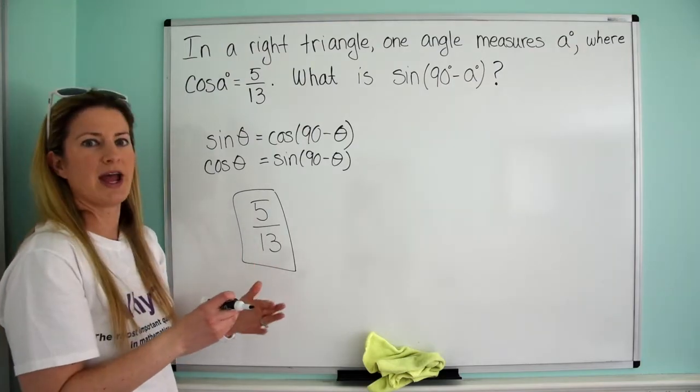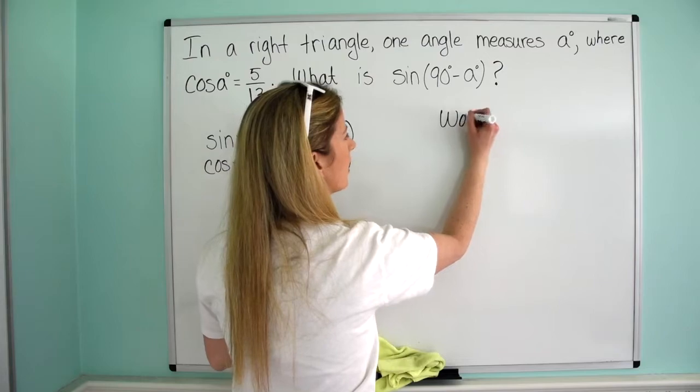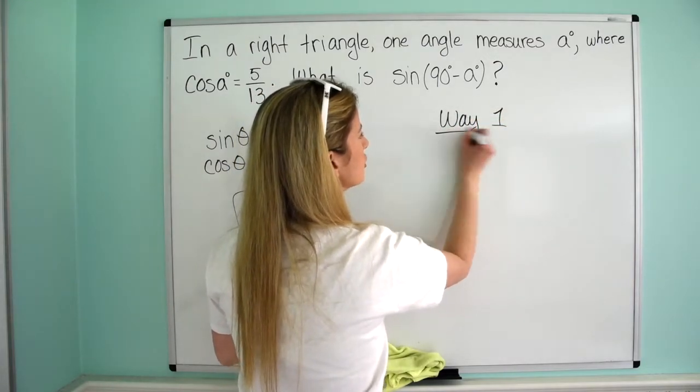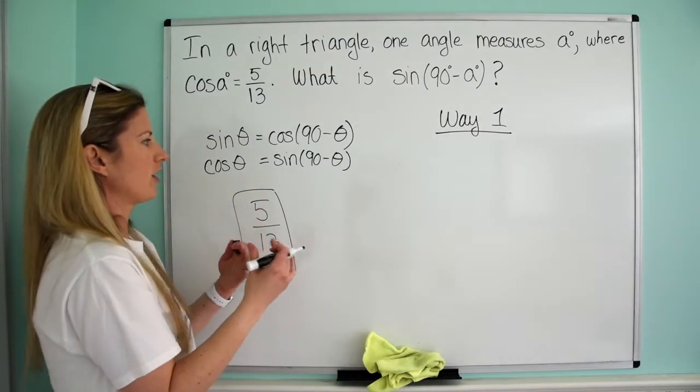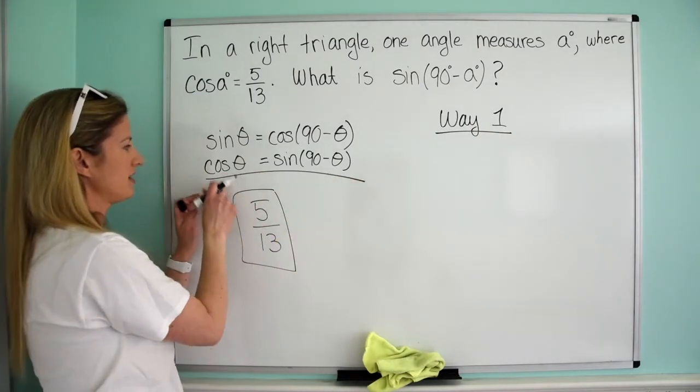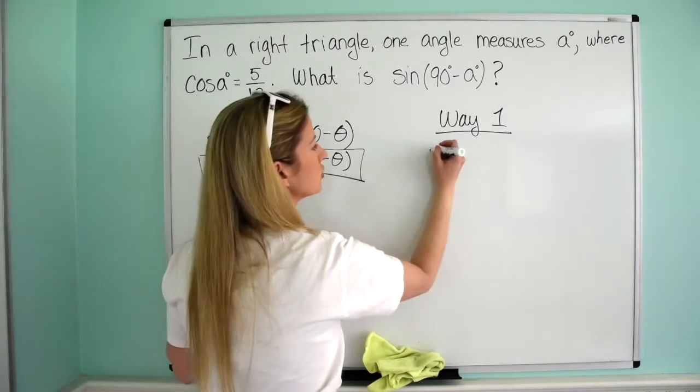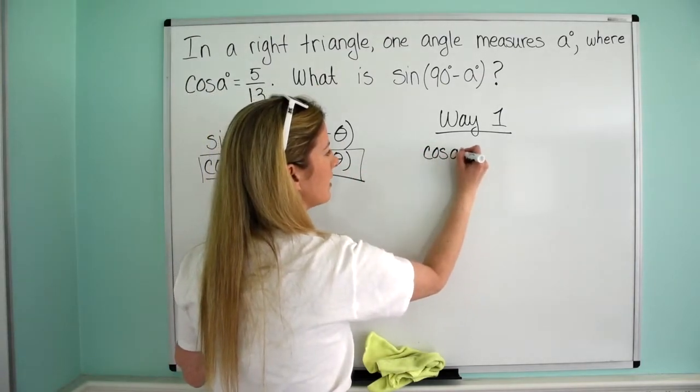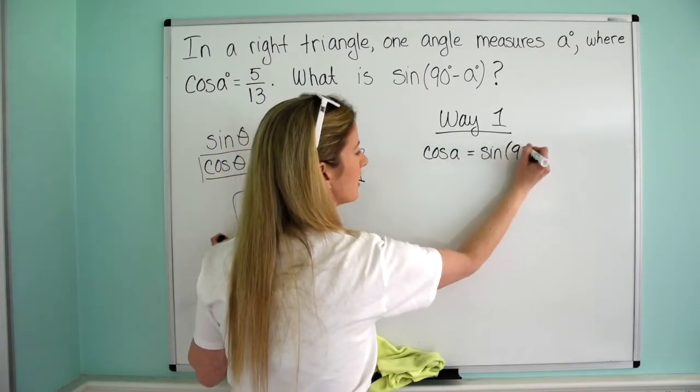So look at how fast that was. Now, I know even with this first way, I didn't really show much work. So let's just write it out here. We'll call this way one. So with way one, what we just said is we thought of our co-function identity. This one here is the one that we are going to use. So let's rewrite it using A, because that's what we have.